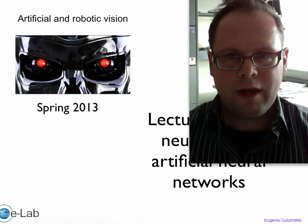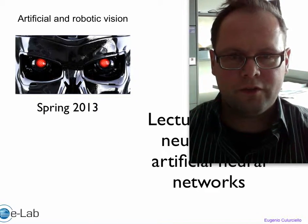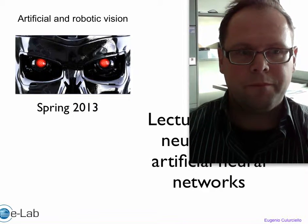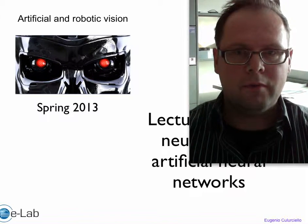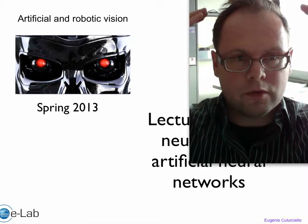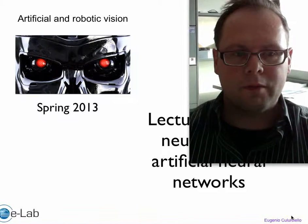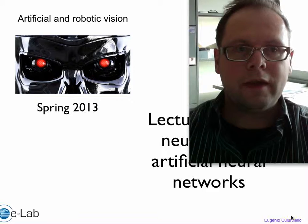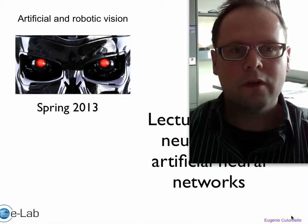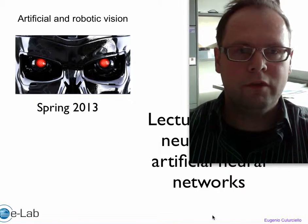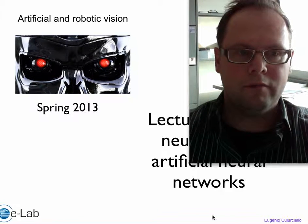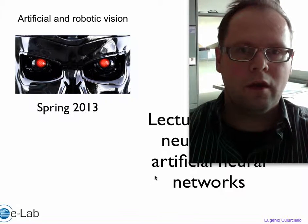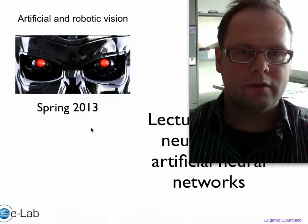As you can imagine, artificial neural networks take inspiration from our own neural network, what's under the hood here in our brain, since our brain is like a computer that computes all the vision property and vision abilities that we want to reproduce in a robotic system.